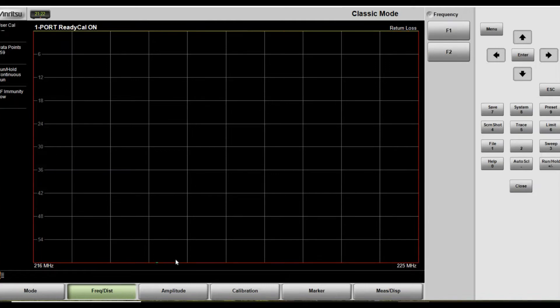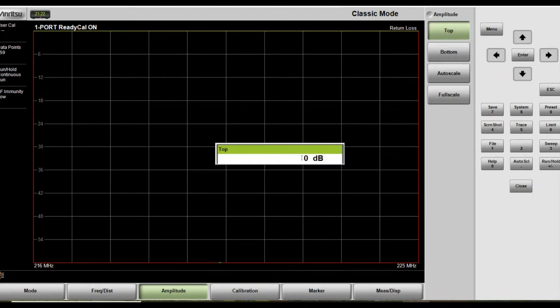The second thing I would go for would be the amplitude. I would like to set up my screen. Now, as you can see at the bottom, 216 to 225. That's the bandwidth I'm interested in. I need to set up the top of the screen to the bottom. Normally the minimum, the least value is zero. Should be zero, zero dB. Press enter.